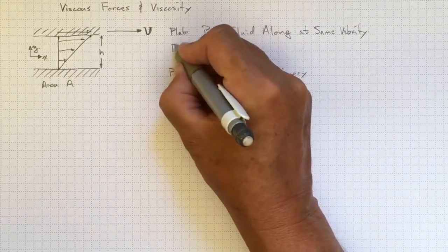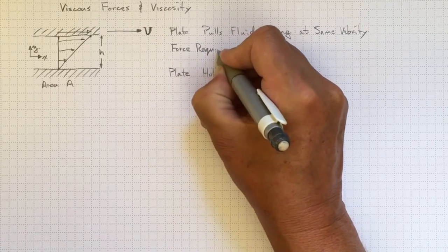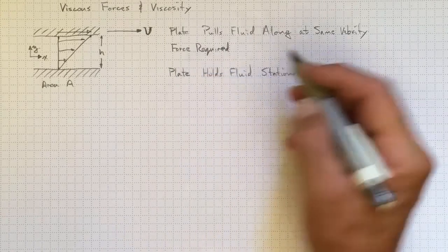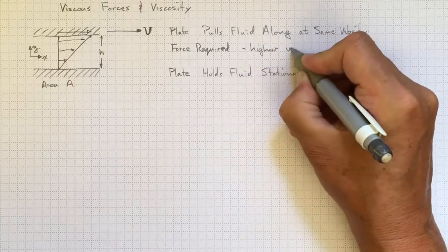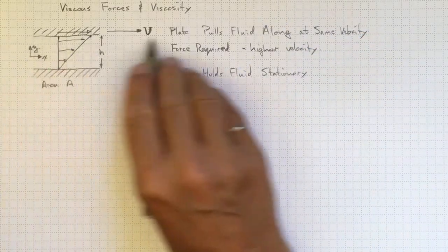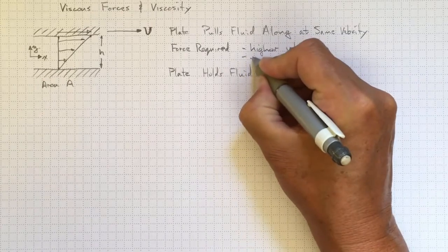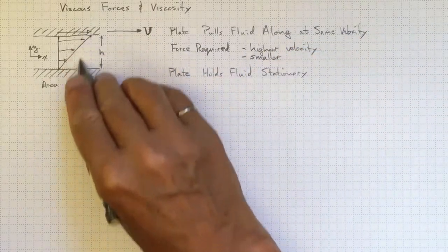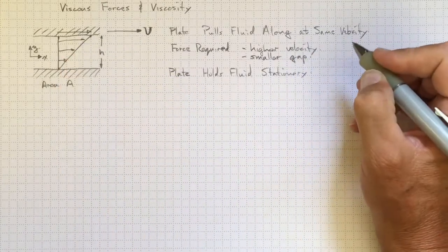The force required to make this top plate move goes up with a variety of things, and we know this from observation and from measurements. It goes up with higher velocity, so that the faster we want to go, the harder we're going to have to pull on that top plate. It goes up with a smaller gap. The thinner the gap in between these two plates, the harder it is going to be to pull the top one along.